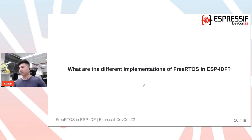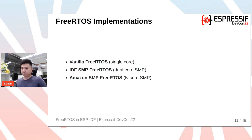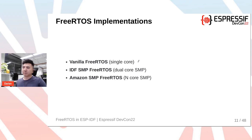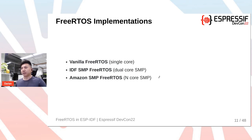There are three implementations of FreeRTOS in relation to ESP-IDF: vanilla FreeRTOS, IDF-SMP FreeRTOS, and Amazon-SMP FreeRTOS. Note these aren't official names — just names for this presentation. Vanilla FreeRTOS is the traditional single-core version written by Richard Barry and real-time engineers. IDF-SMP FreeRTOS is the dual-core SMP-modified version written by Espressif. Amazon-SMP FreeRTOS is a recent addition where Amazon wrote an n-core SMP version capable of supporting more than two cores.